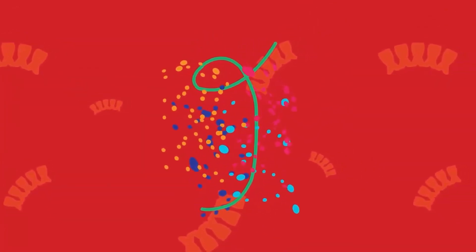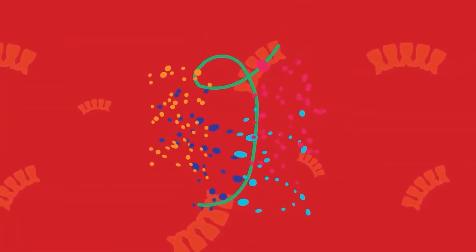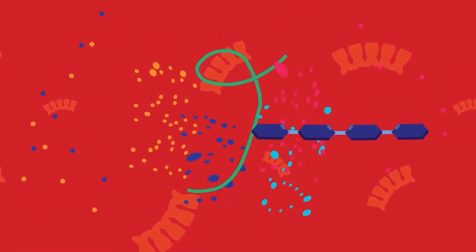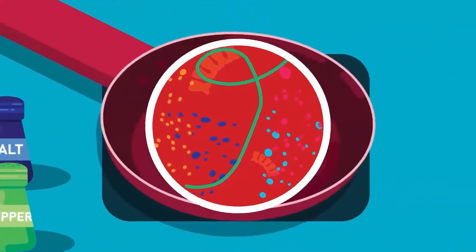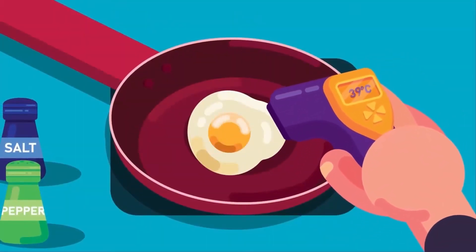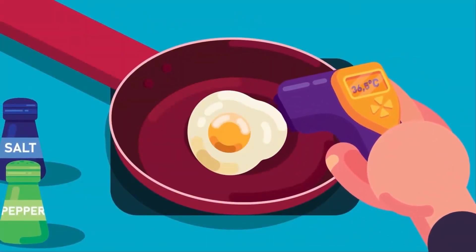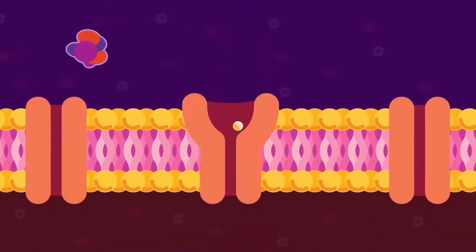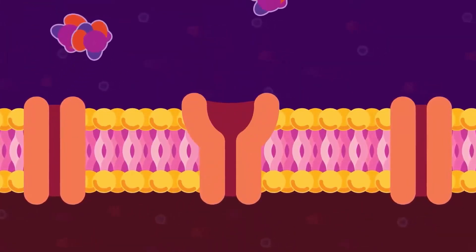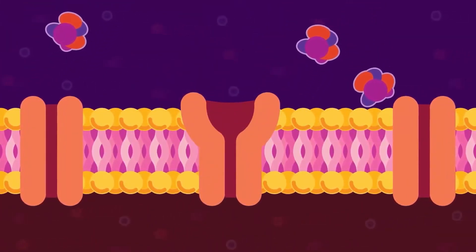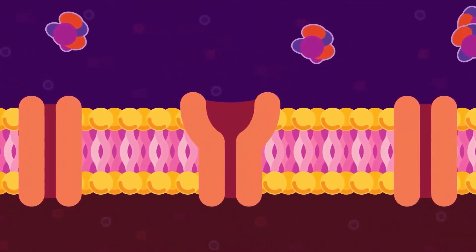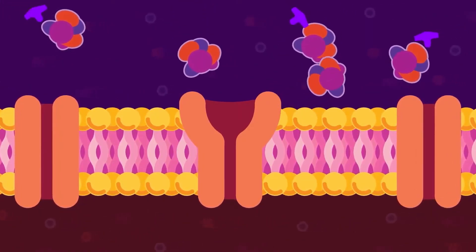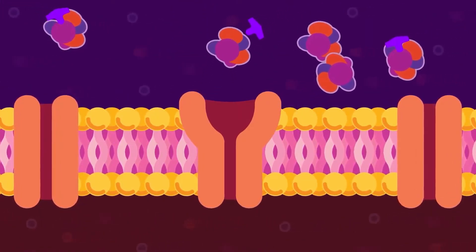The breaking of these bonds causes protein denaturation and affects the functions of protein. This is why when we have a high fever, we are told to lower our temperature. As protein molecules are very large, they cannot pass through cell membranes, so ingested proteins cannot be absorbed directly into the body of animals — they have to be broken down by enzymes.